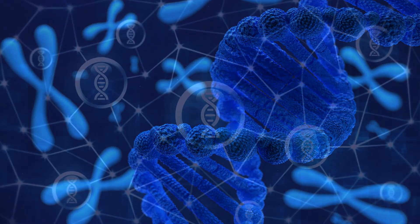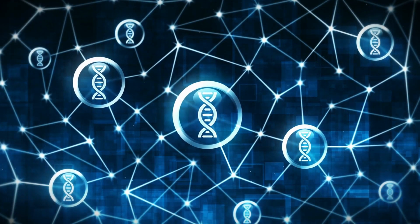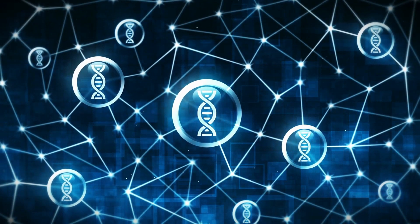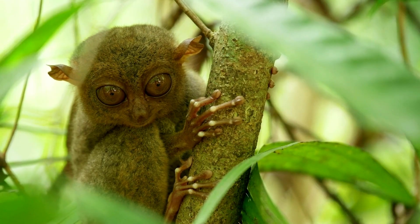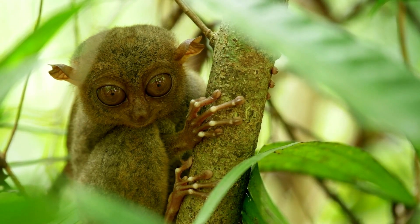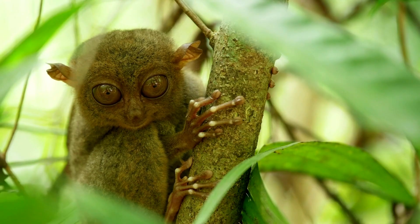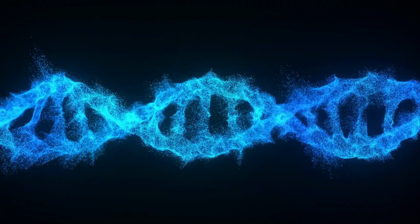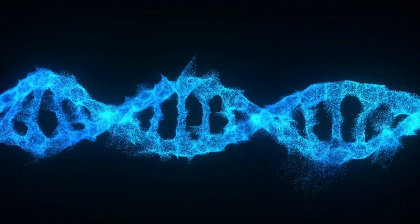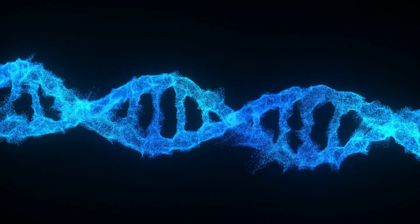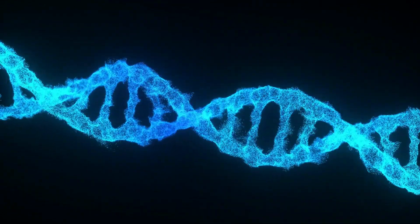Genetic variation. Every living thing has traits that make it unique, like the color of its fur or the shape of its beak. These traits come from genes, which are like instructions in our bodies. Sometimes these genes can change or mutate, creating new variations.